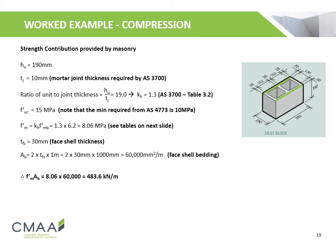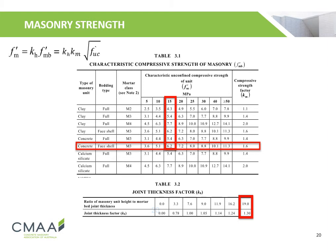The strength contribution provided by the masonry is calculated. The height of the unit and the joint thickness are 190 and 10 millimeters respectively. The ratio of unit height to joint thickness is determined, and KH is determined from Table 3.2 of AS3700. The unconfined compressive strength of the unit is 15 MPa, and the compressive strength of the masonry is calculated to be 8.06 MPa. The face shell thickness is 30 millimeters, and the overall face shell bedding area is calculated to be 60,000 mm² per meter. Thus, the strength contribution provided by the masonry is calculated to be 483.6 kN per meter. The characteristic compressive strength of the masonry and the unconfined compressive strength of the masonry units are determined from Tables 3.1 and 3.2 respectively, using face shell bedded M3 mortar with standard block units.